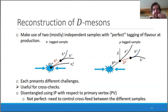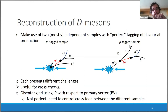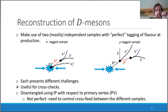The other sample is the muon-tagged or secondary sample, where the charm meson comes from a B hadron decay, and the flavor is tagged from the muon. Each presents different challenges and is useful for cross-checks. I'll mostly focus on the pion-tagged sample, but the muon-tagged sample is important both for cross-checks and because it can be a dangerous background in the prompt sample, so we need to control the cross-feed between these samples.